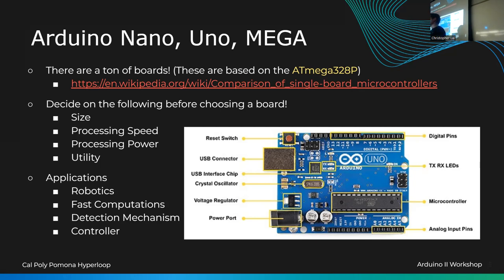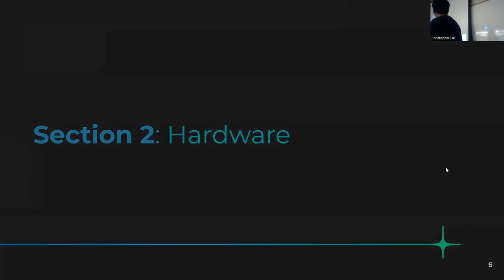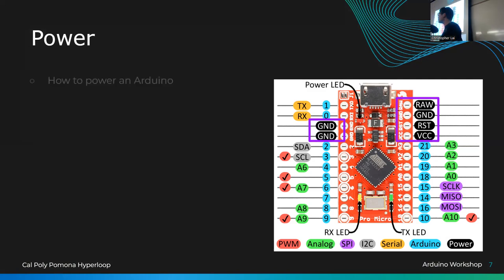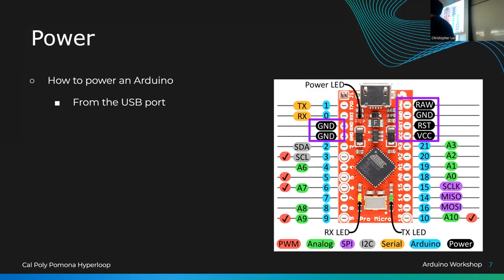Applications include robotics, fast computation, and detection mechanisms. Now for hardware — the Arduino Pro Micro is the board we're using today. It's smaller than the Nano with fewer GPIO pins and a more compact interface. For power, the safest method is the USB port, which delivers 5 volts at 500 milliamps from your computer, and it has a built-in voltage regulator.